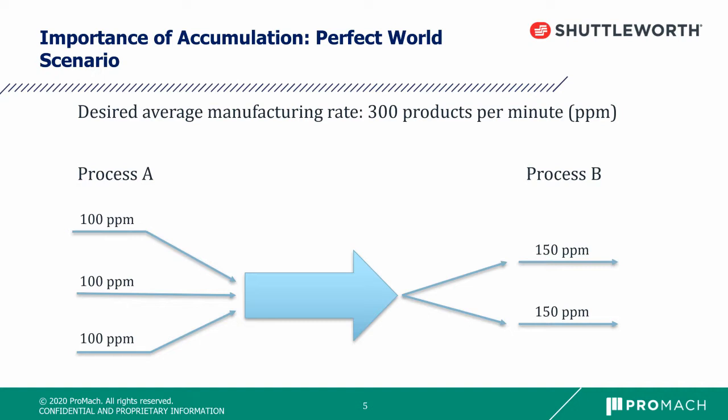The flow from process A is simply combined from three lanes to two, and products are balanced to the two machines in process B at 150 products per minute each. Unless you were born yesterday, you know that the world is not perfect. We must consider the possibility of one of the machines experiencing downtime. So let's say a process B machine goes down for two minutes, and you don't have an accumulation system. Mass chaos ensues.